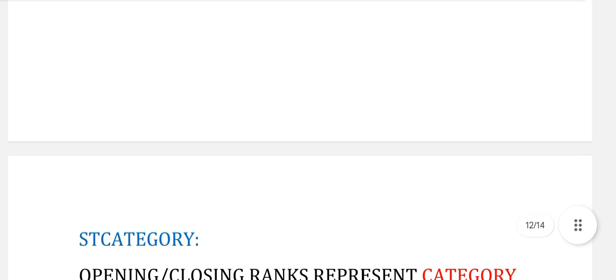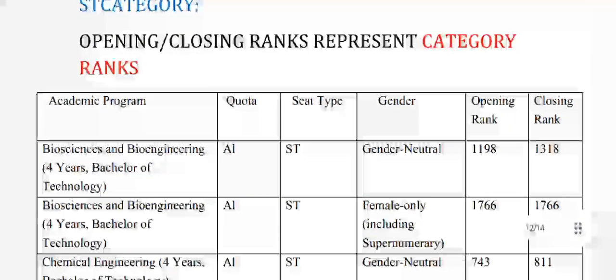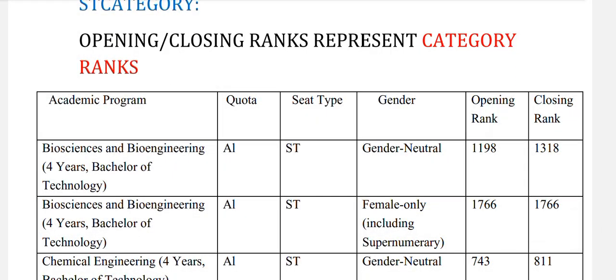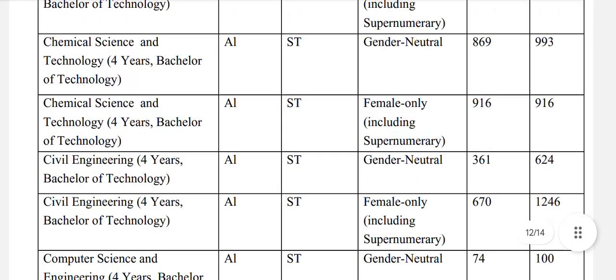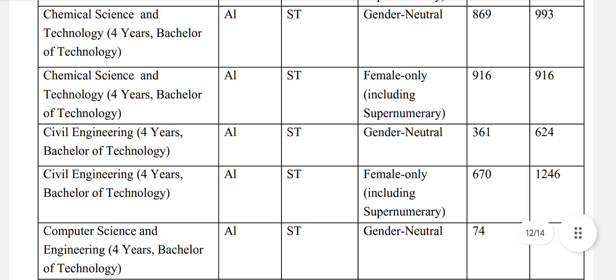Now let's see the data for ST category. The opening and closing ranks represent your category rank. Bioscience and Bioengineering, ST gender-neutral: 1318. Chemical Engineering, ST gender-neutral: 811. Chemical Science and Technology, ST gender-neutral: 993, and for females: 916. Civil Engineering, ST gender-neutral: 624.